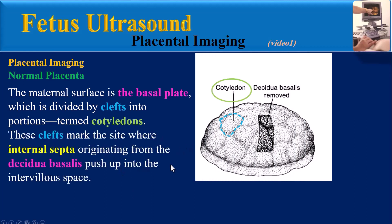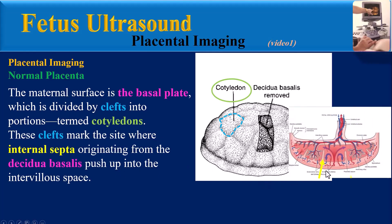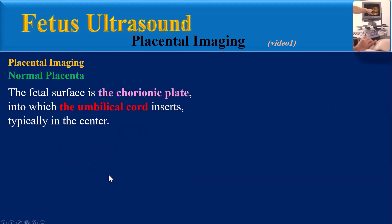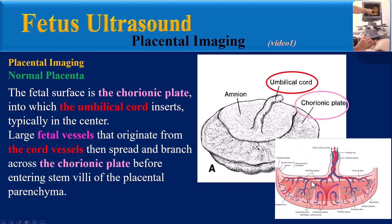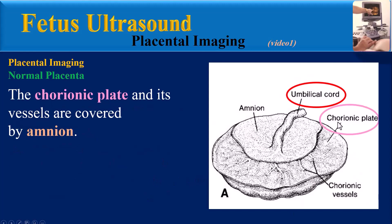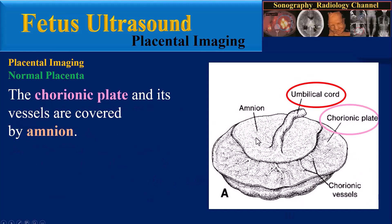These clefts mark the site where the internal septa originate from the decidua basalis and push up into the intervillous space. The fetal surface is the chorionic plate, into which the umbilical cord inserts, typically in the center. Large fetal vessels originating from the cord vessels spread and branch across the chorionic plate before entering the lobules of the placental parenchyma. The chorionic plate and its vessels are covered by amnion.